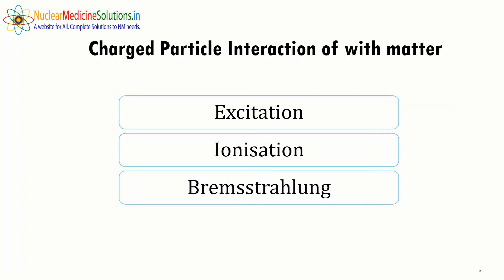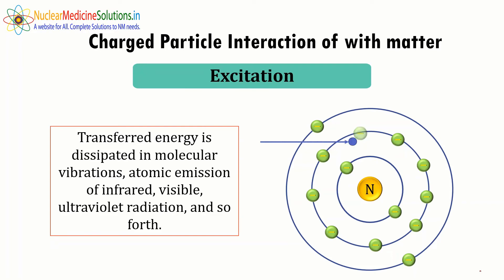Let's see how charged particle radiation interacts with matter. There are three possible interaction mechanisms: excitation, ionization, and Bremsstrahlung radiation. In excitation, the incident particle transfers energy to an orbital electron, giving it sufficient energy to move to a higher orbit. When the electron returns to its original state, it releases energy in the form of electromagnetic radiation such as UV, IR, or visible light, dissipated in molecular vibrations and atomic emissions.